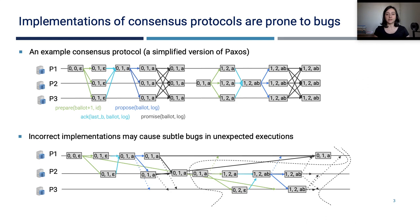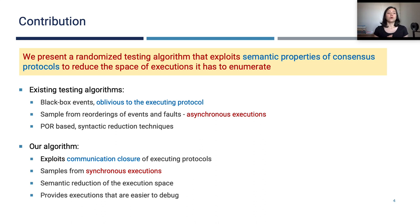However, it's not very easy to correctly implement consensus protocols. And incorrect executions may cause subtle bugs in unexpected executions where some messages are dropped, some of them are delayed, reordered, and so on. But there is an enormous number of possible executions of the protocol. And in order to be able to test the protocol and find bugs efficiently, we need efficient testing algorithms.